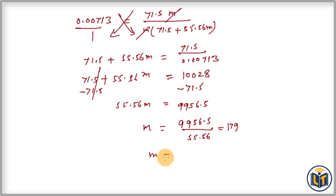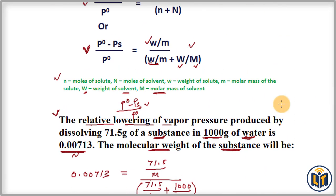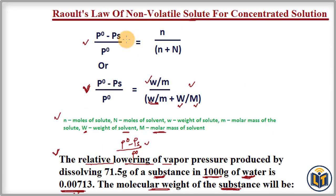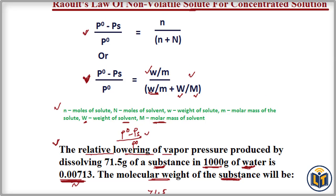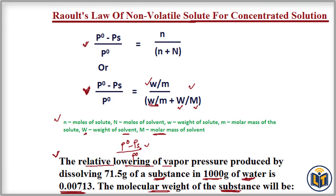So the molecular weight of the non-volatile substance is 179 grams per mole. This is how we calculate the molecular weight using Raoult's Law of non-volatile solute. As a tip: if the relative lowering of vapor pressure is a very small value, it indicates that the solution is concentrated.